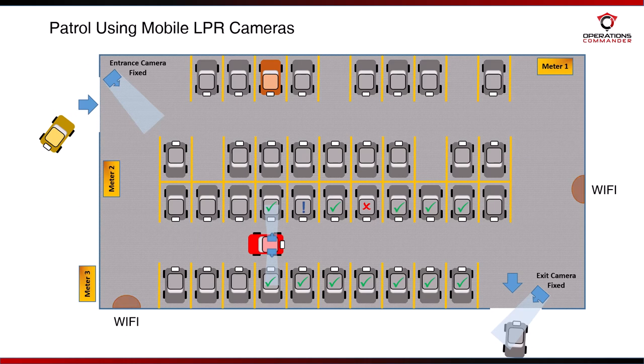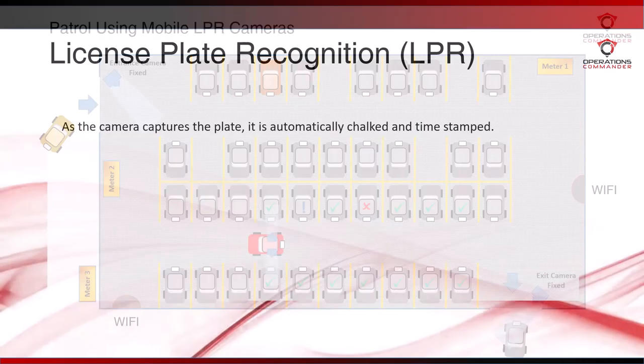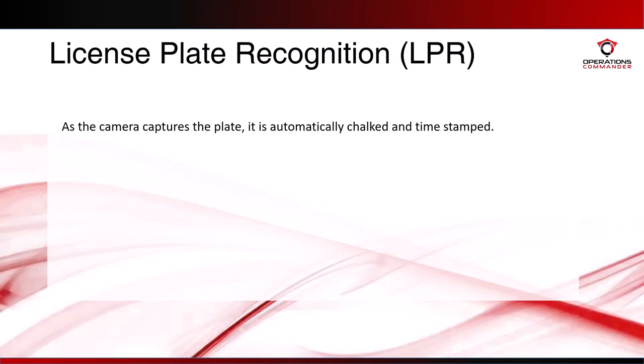As the camera captures plates, it automatically chalks and timestamps. Plate reads that are valid are flagged with a green rectangle. Plate reads without a valid permit are flagged with an orange rectangle. Plate reads with a permit but that are not valid in the specific lot being patrolled are flagged with a blue rectangle.